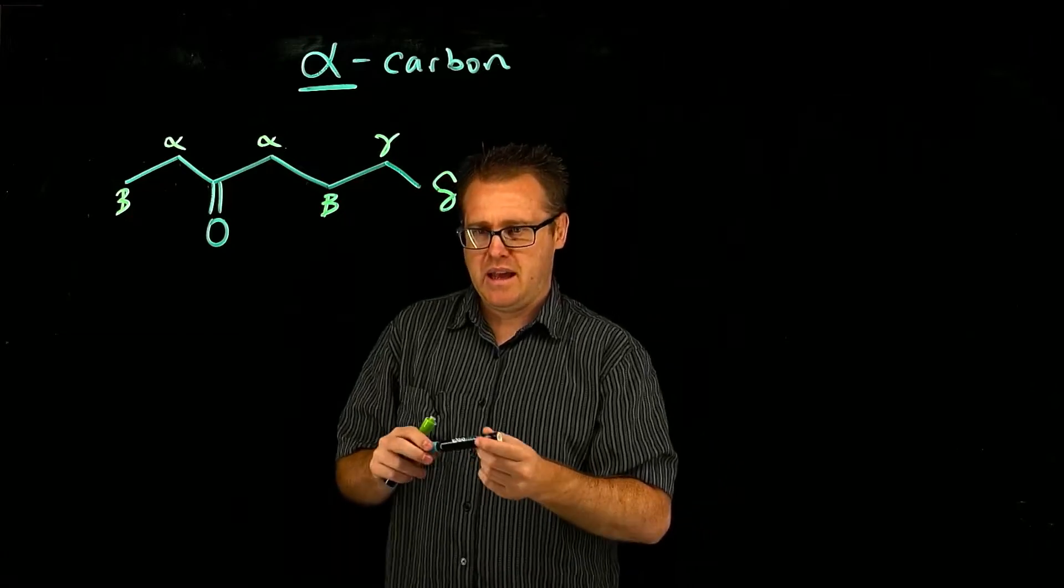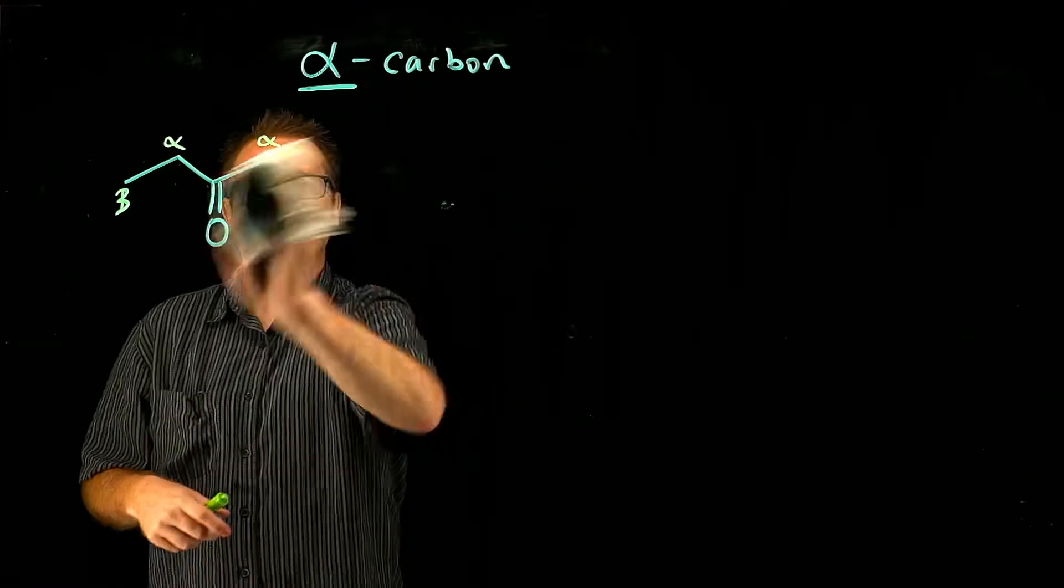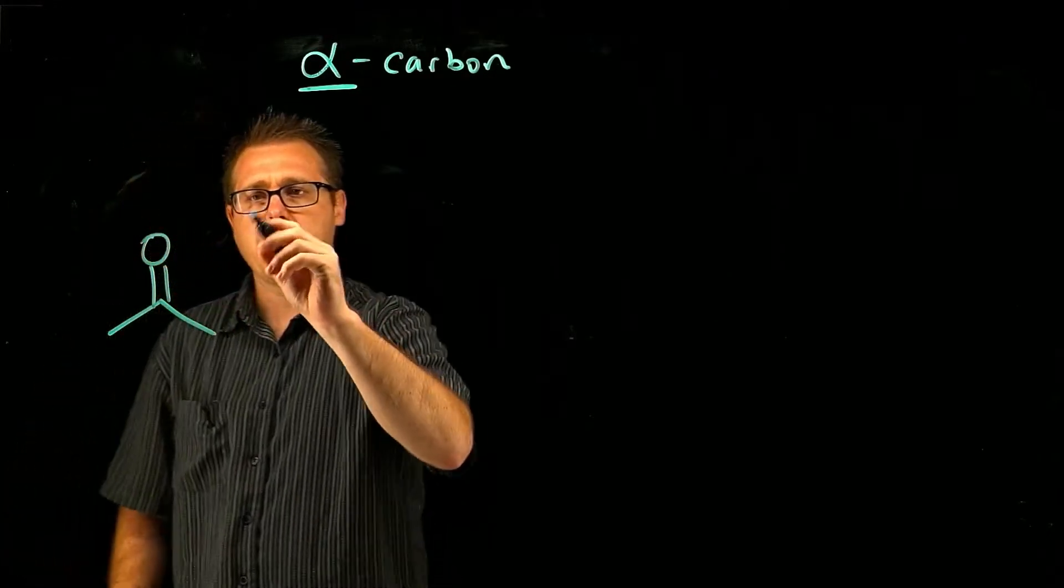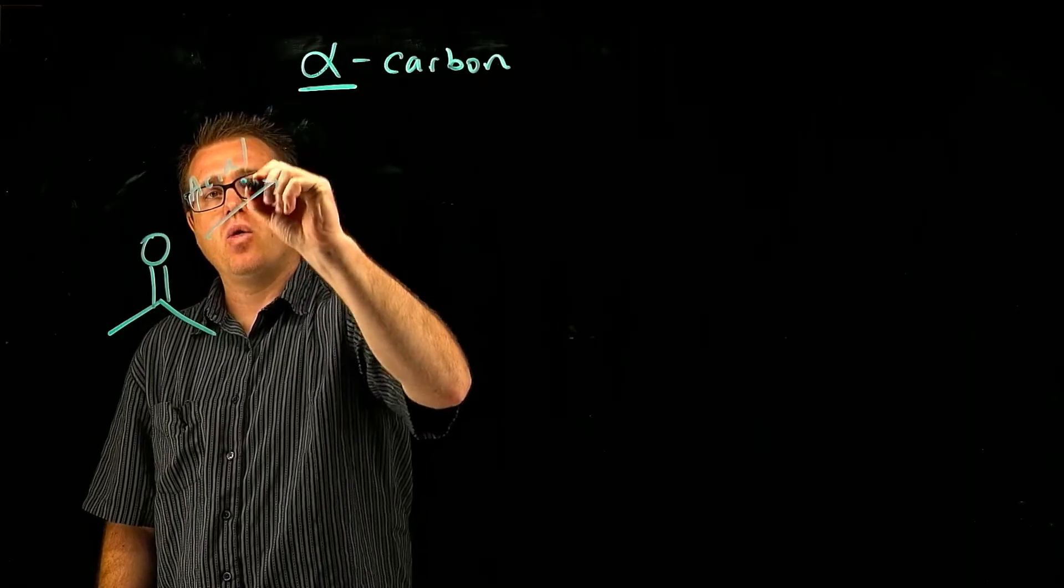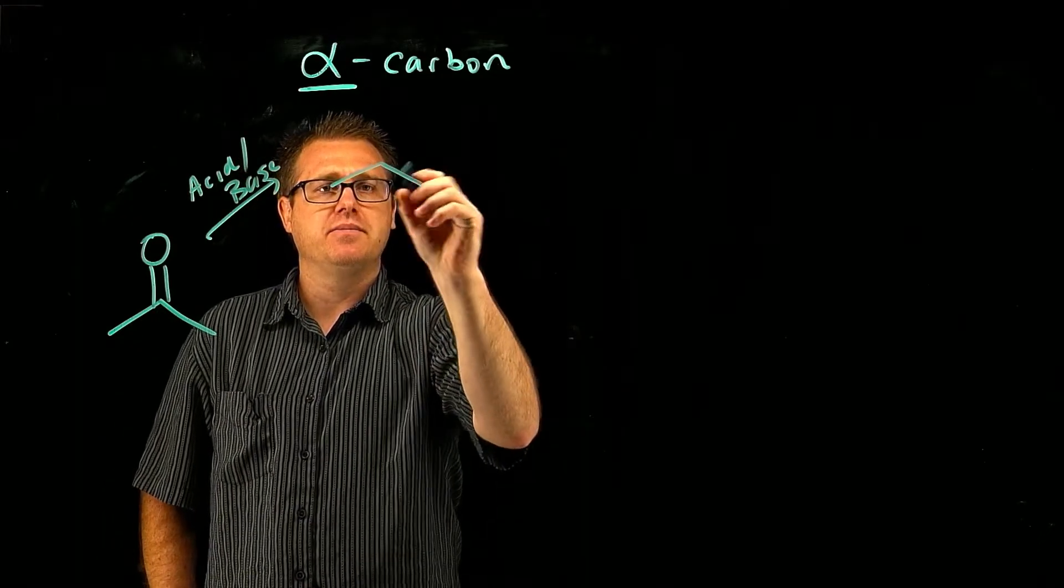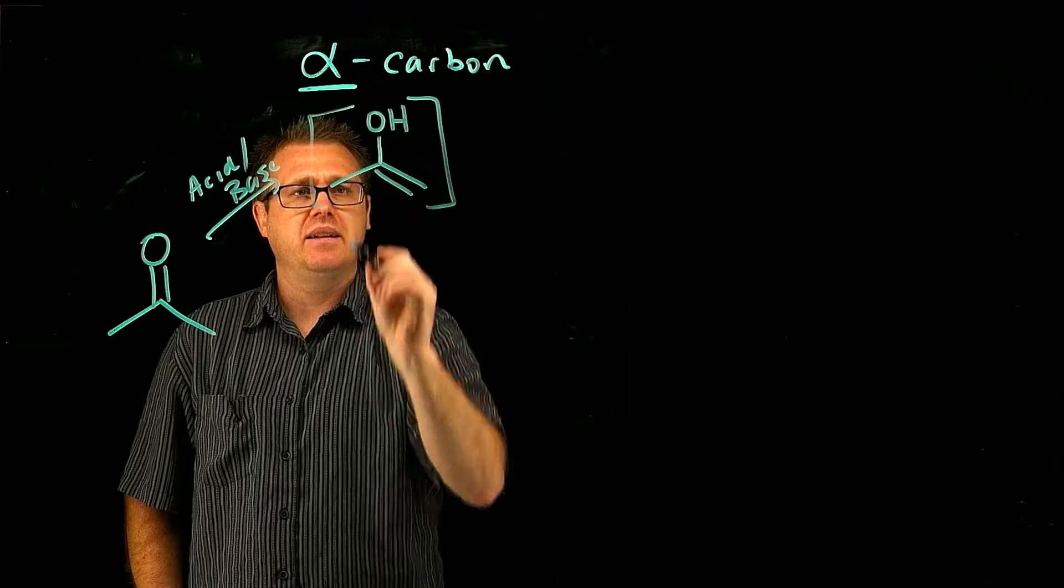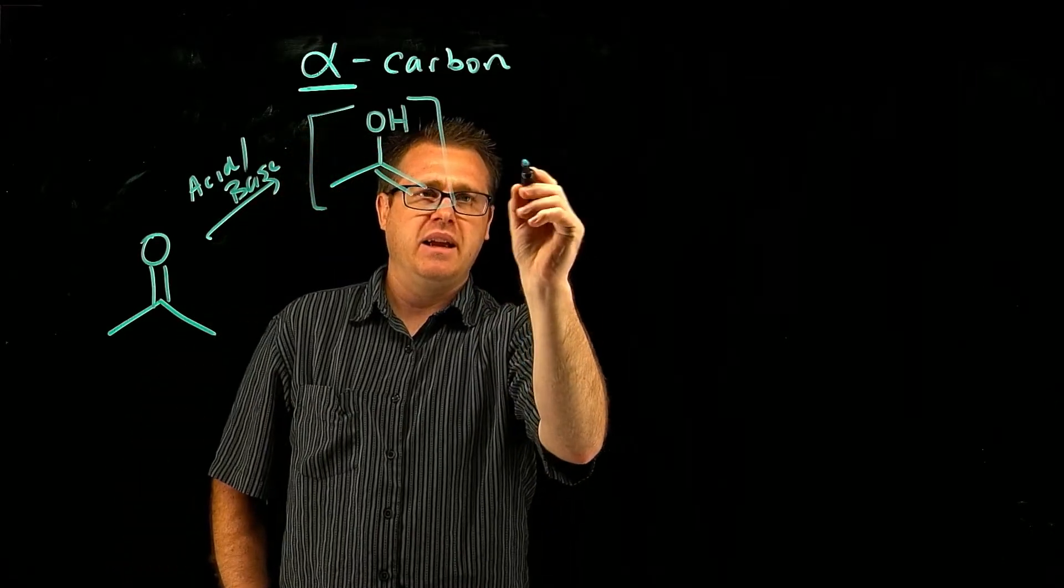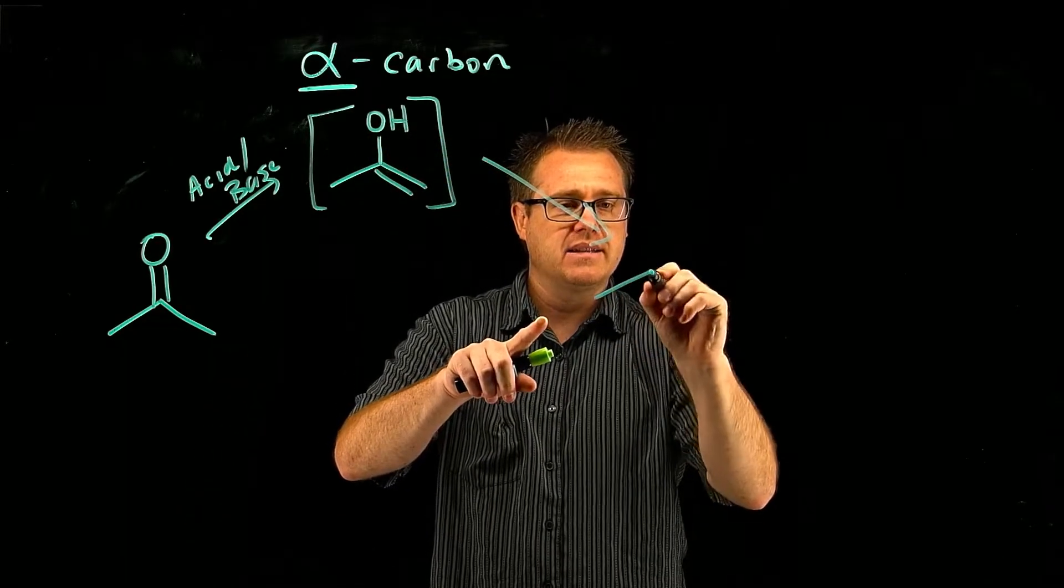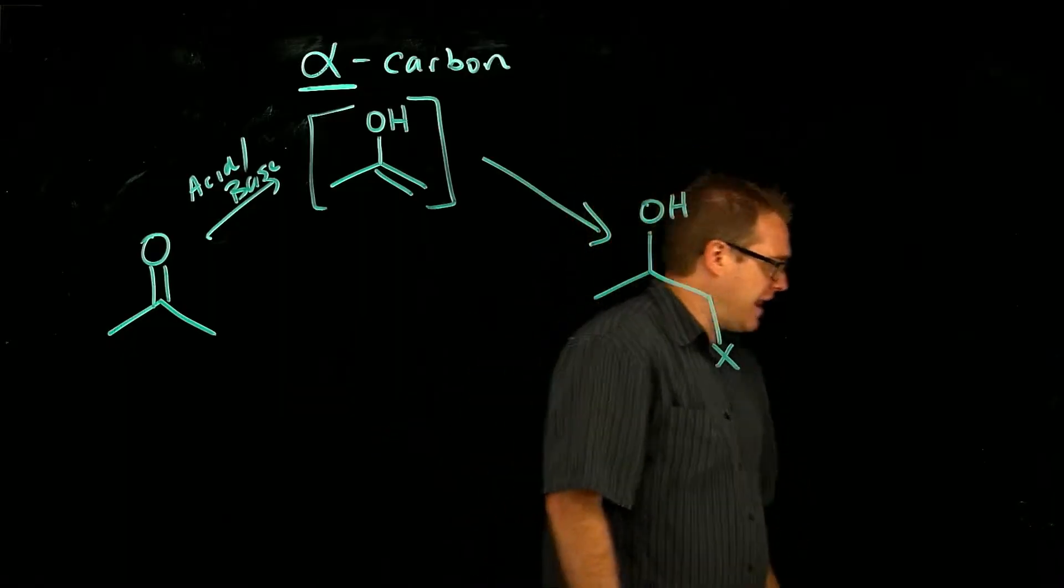And so what we're going to do is we're going to take, let's say, a generic ketone. So if we take a generic ketone like that, we could treat it with acid or base, and we're going to generate a molecule that looks like this. And that's going to be an intermediate, and then you take that intermediate, and you're going to react it, and you're going to place something on that alpha carbon.